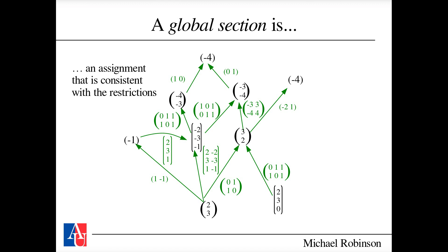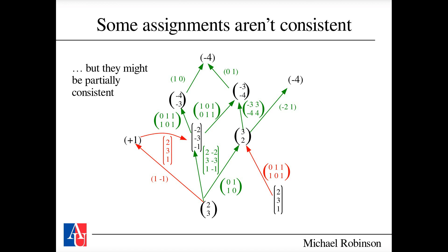Anyone who has worked with data knows that global sections are nice but rare in practice — there's always some noise or error. What happens if you tweak something? Some assignments won't be consistent. For instance, changing two particular values — replacing minus one on the left with plus one, and changing (2,3,0) to (2,3,1) at the bottom — means some arrows no longer give a perfect matchup; the assignment is only partially consistent.